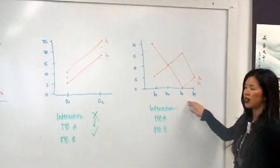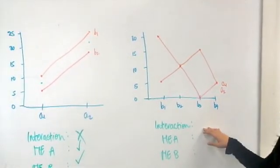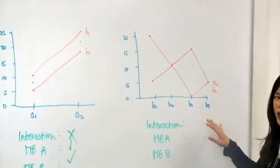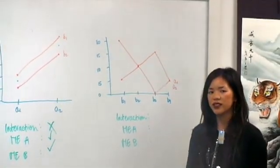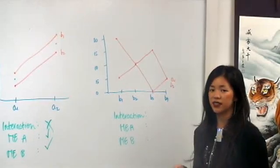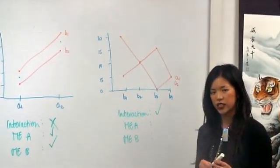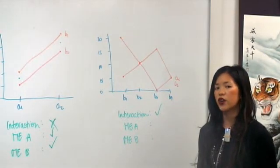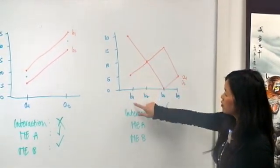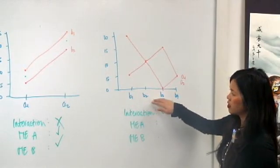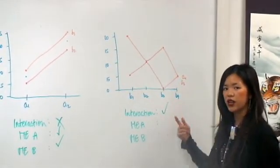So here we have B on our x-axis and our lines are A's. In looking for an interaction, we want to make sure that our lines are not parallel. And all it means when they're not parallel is that we have reason to suspect that we might have a significant interaction. But you don't actually know if you have a significant interaction until you either test it out by hand or via SPSS. So here this means, again, that the levels of one of our factors are changing at the levels of the other independent factor.